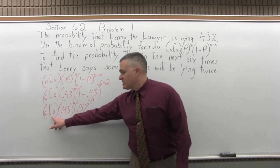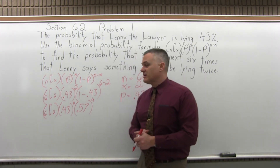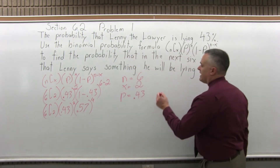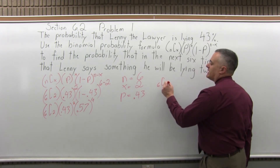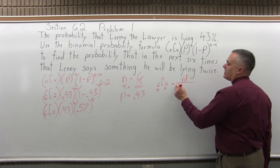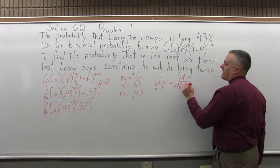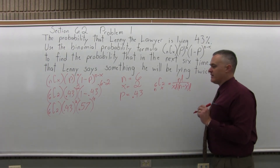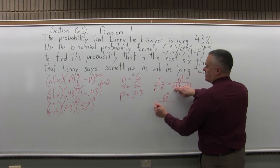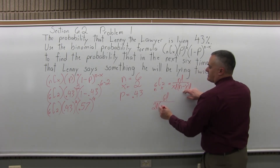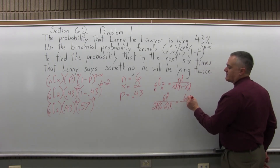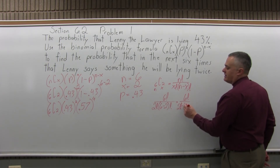Now I have to get an answer for each set of parentheses — three answers — and multiply those three answers together. The first one involves combinations, so let me work out 6 combination 2. The 6 is the n, the 2 is the x, and the formula is n factorial over x factorial times (n minus x) factorial. So n factorial is 6 factorial, x factorial is 2 factorial, and n minus x is 6 minus 2, which I can replace with 4 — giving 6 factorial over 2 factorial times 4 factorial.